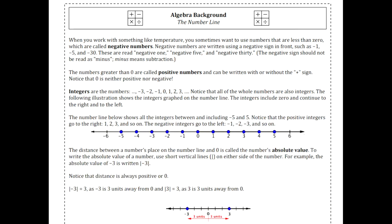The real number system is an excellent way of depicting all of the real numbers and their positions. We begin with zero in the middle. To the right we have the positive numbers — depicted here are the positive whole numbers. To the left we have the negative numbers — depicted here are the negative whole numbers. If we take all of the negative and positive whole numbers together, we get what are called the integers.